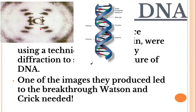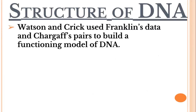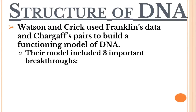After seeing Photo 51, Watson and Crick were able to take measurements and relatively quickly develop a functioning model of DNA. Photo 51 was really the catalyst. Rosalind Franklin was actually the one who took the image — she was working with Maurice Wilkins, but it was her photo. Using that image and Chargaff's pairs — knowing adenine goes with thymine and cytosine goes with guanine — they were able to build a functioning model of DNA.